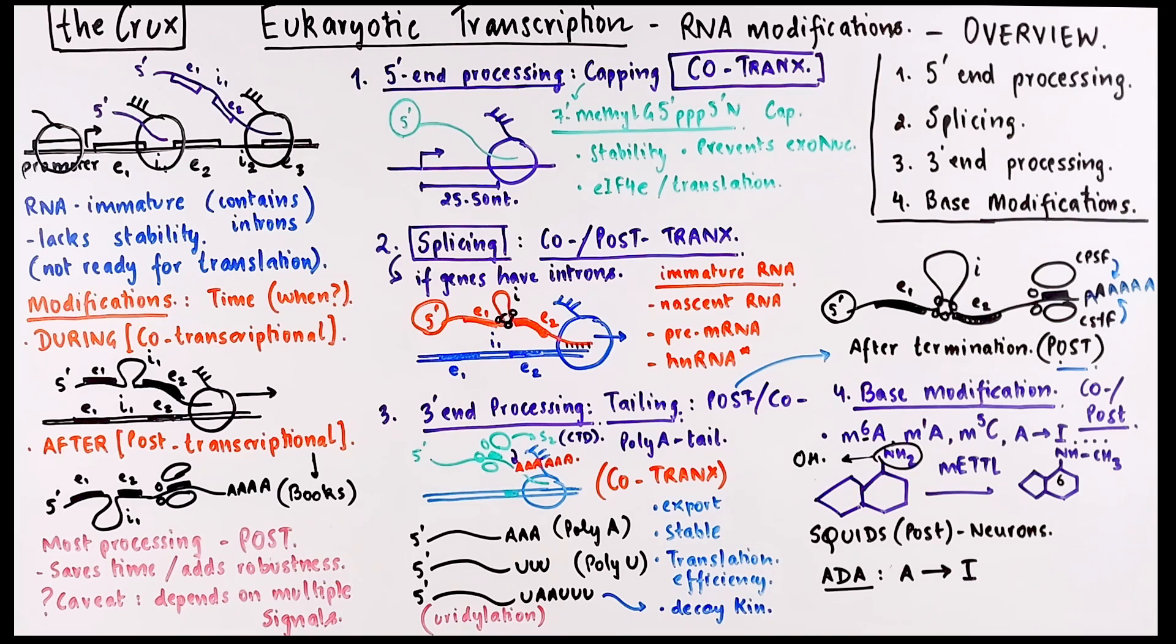These base modifications, and M6A specifically, can recruit effector proteins and modulate RNA secondary structures, which as a result modulates RNA metabolism, including its maturation, translation, and decay rates. And that wraps up this overview video.